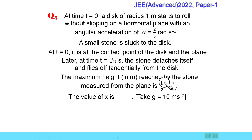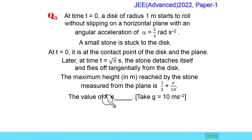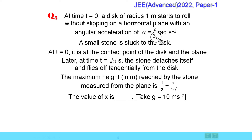This stone's maximum height is measured from the plane — the horizontal plane on which it rolls. The maximum height is expressed as 1 by 2 plus x divided by 10, and we need to find x. For this situation, the initial angular velocity is equal to 0, t value is root pi second, and alpha value is 2 by 3 radian per second square. We need to find the angle rotated by the disk from t equal to 0 to t equal to root pi second.